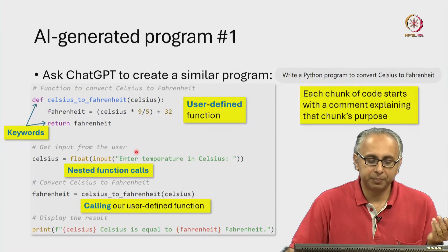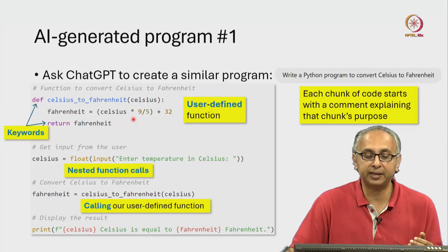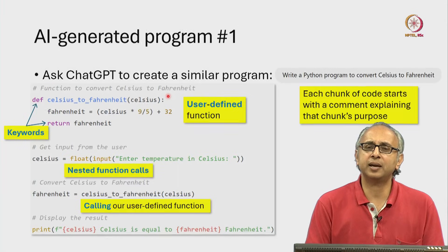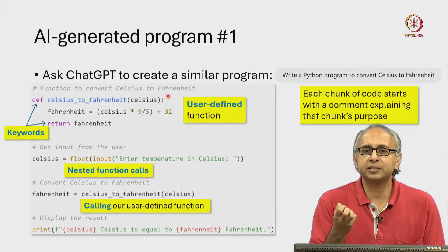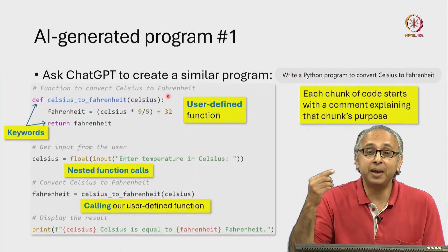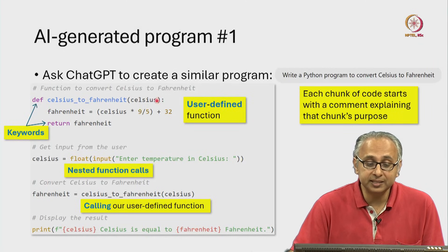Why did the AI decide to do this? Well, it turns out that this calculation may be used at many different points in our code. By writing it inside this user defined function,